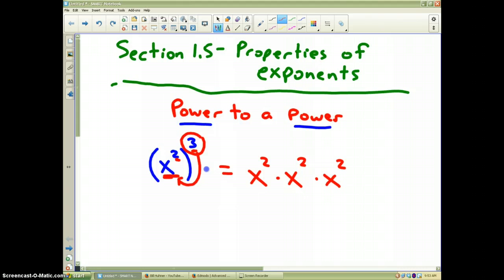Well we all know from properties of exponents, what I have now written and what I'm underlining, you add the powers to simplify. Two plus two plus two makes x to the sixth power. And that is my final simplification.